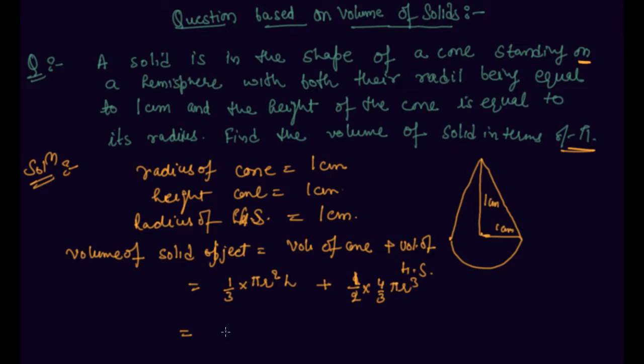So to take common, I will take π r² / 3, and I am getting here as h + 2r.